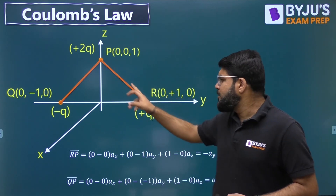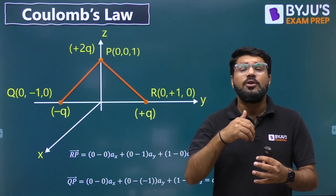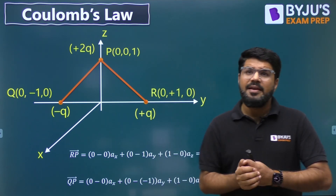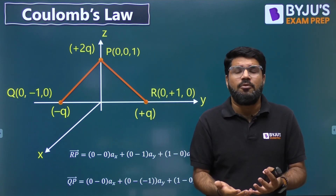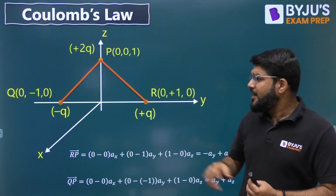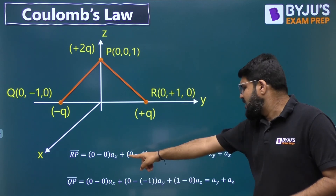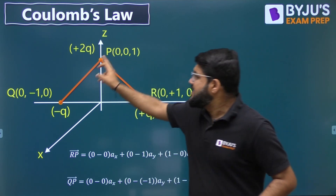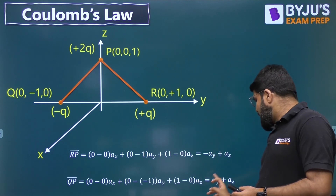To solve this, I have joined point P with respect to R and also with respect to Q. The force is going to be along the unit vector line joining the two points. Before finding the unit vector, let us find the vector, then divide by the magnitude to get the unit vector. The vector from R to P: using X2−X1 in Ax, Y2−Y1 in Ay, Z2−Z1 in Az — we get −Ay + Az. The vector from Q to P: we get Ay + Az.